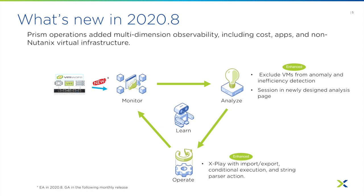We're also introducing a conditional execution capability, so now you can have multiple different execution paths based on status — whether it's the current machine status or the approval status passed in from an external system — making cross-play even more powerful.